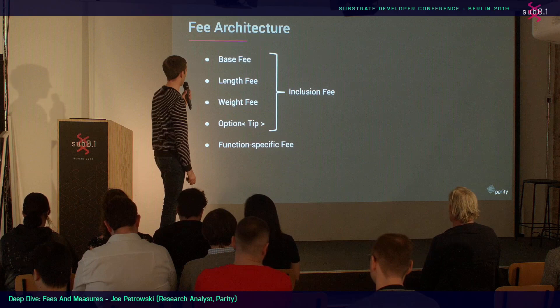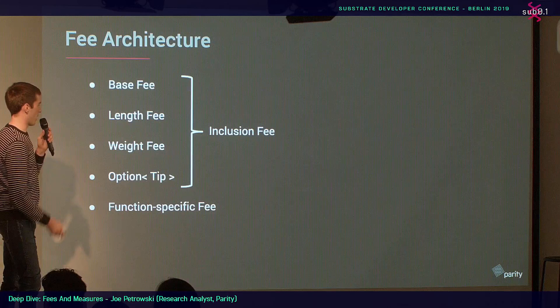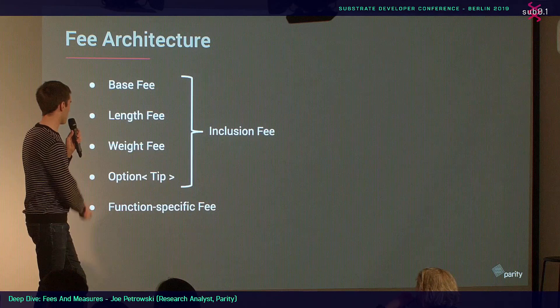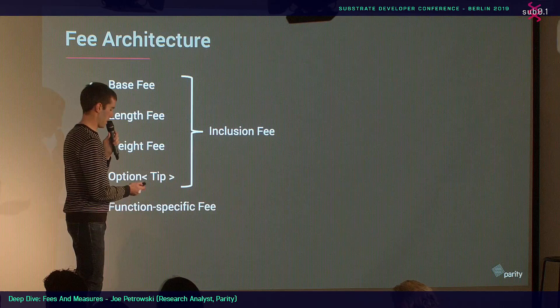Fees have a bunch of different components: base, length, weight, and an optional tip. All of these combine to form an inclusion fee. These four things are what actually gets computed and deducted before a transaction gets dispatched. There's also some other stuff you can do within the function itself, but these four things together constitute the inclusion fee.